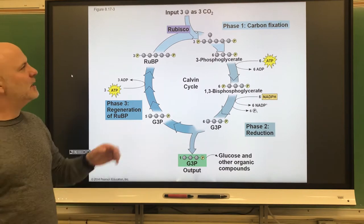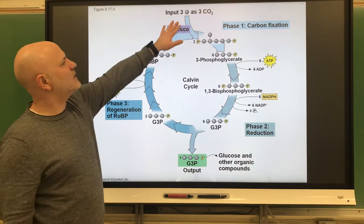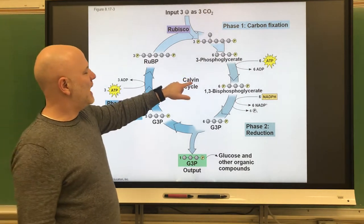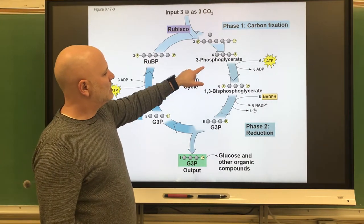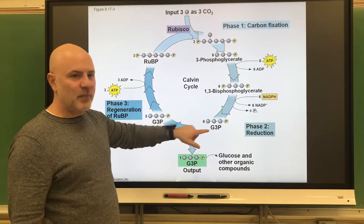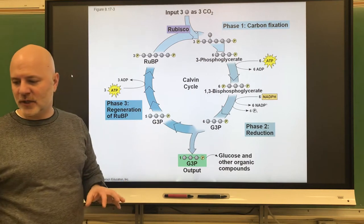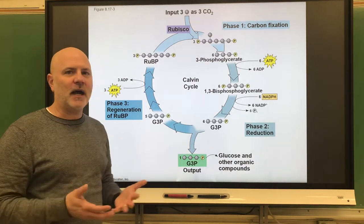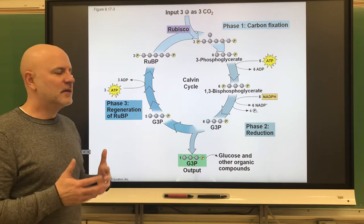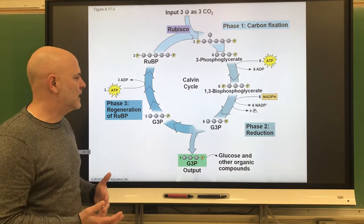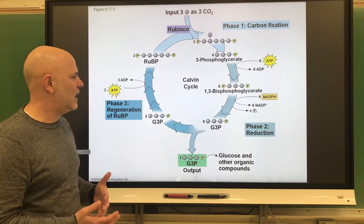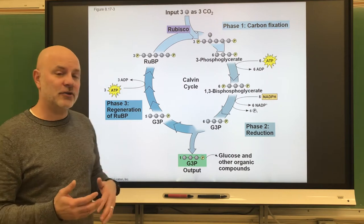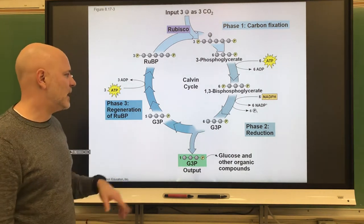What happens here is that we fix carbon dioxide onto this organic molecule, and it's going to eventually make a molecule known as G3P. G3P — I mentioned way back in glycolysis — this is the same molecule that we produce after the energy-investing steps in glycolysis.